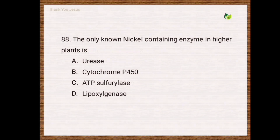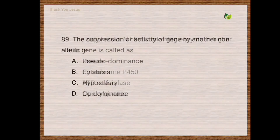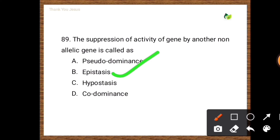Next question: The only known nickel-containing enzyme in higher plants — options are urease, cytochrome P450, ATP sulfurylase, lipoxygenase. The correct option is the first one, urease. Next question: The suppression of activity of a gene by another non-allelic gene is called — pseudodominance, epistasis, hypostasis, co-dominance. The correct option is epistasis.